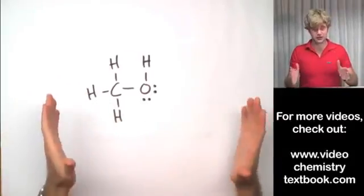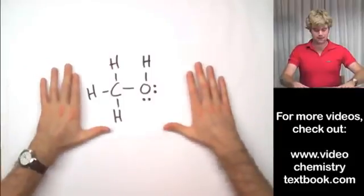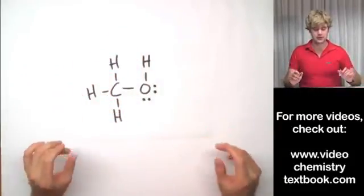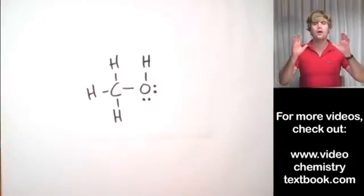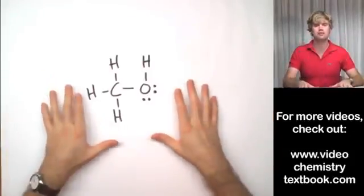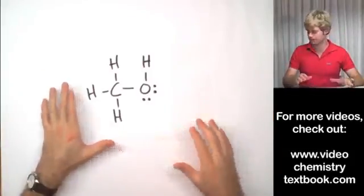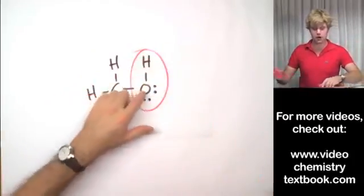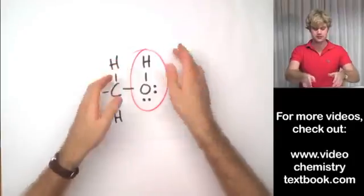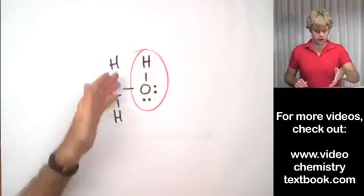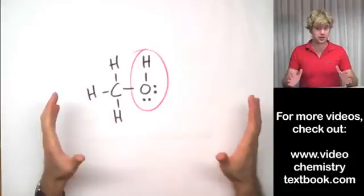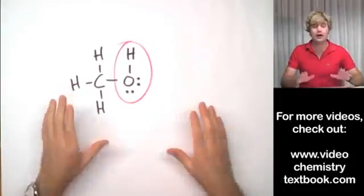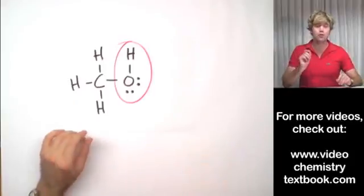Imagine this is a question on a test and you're given the structure of this molecule, and the question says show the hydrogen bonds in this molecule. And so somebody circles this O and H here and they say this right here shows hydrogen bonds. Is this right or not? It is not right. It's not right at all and here's why.